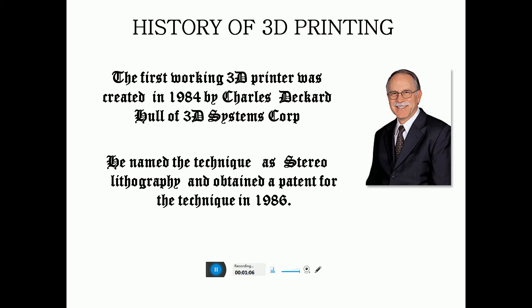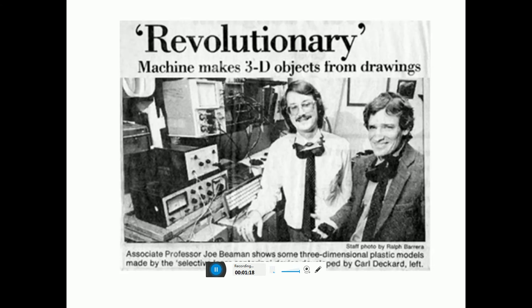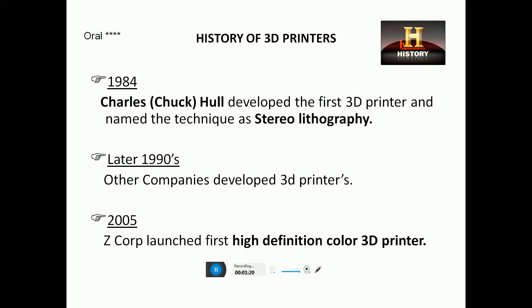The name of the technology is stereolithography, and it was automated on the patent of that technique in 1986. This is the history of 3D printing: in 1984, Charles Hull developed the first 3D printer and named the technique stereolithography. Later, in 1999, Z Corporation launched the first high-definition color 3D printer.